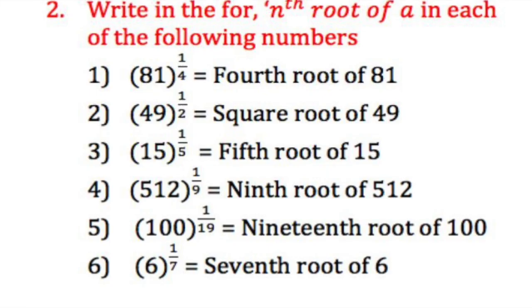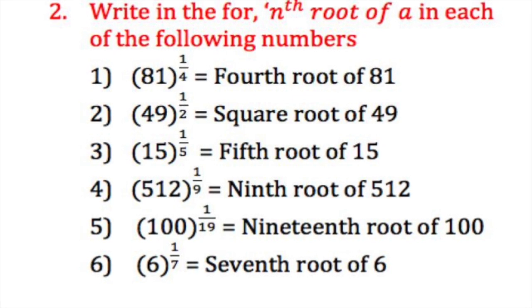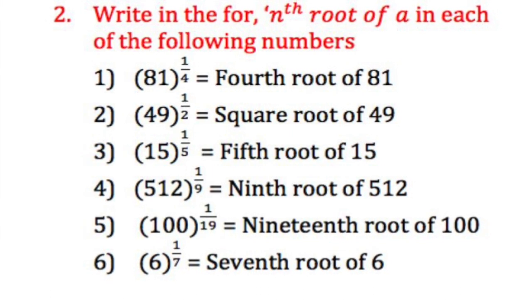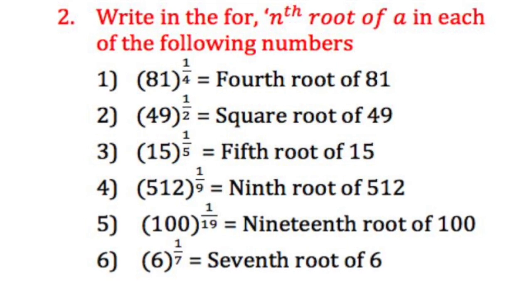Part 2 of the exercise is just the reverse order of part 1. Now here what you have to do is that you have to write nth root of a in each of the following numbers. Now here 81 raised to 1 upon 4 is given. So when you write it in the worded form it will be 4th root of 81.